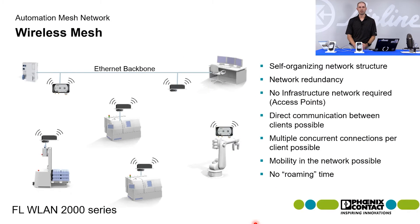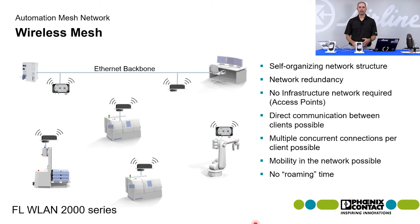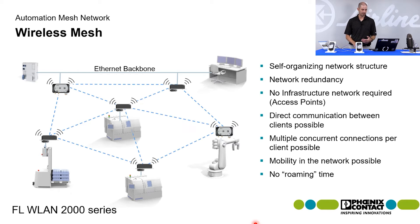What mesh allows you to do is it allows every wireless node to talk to each other. No longer does each node have to connect to a central access point. One node can talk to another node, which can relay information to another node. This allows you to create a semi-private network where all the nodes can pass data back and forth to each other.